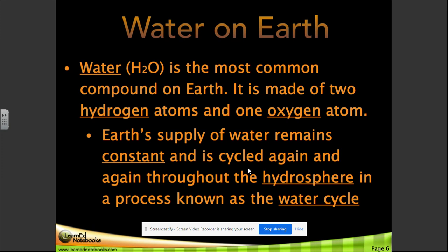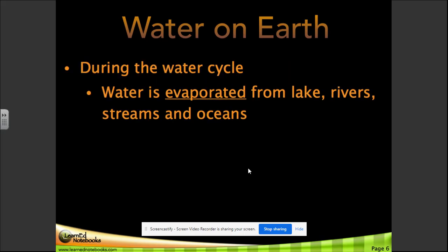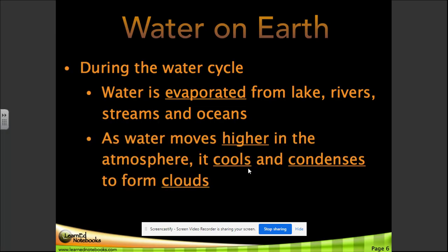Earth's supply of water remains constant and is cycled again and again throughout the hydrosphere in a process known as the water cycle. During the water cycle, water is evaporated from lakes, rivers, streams, and oceans, and as water moves higher into the atmosphere, it cools and condenses to form clouds.